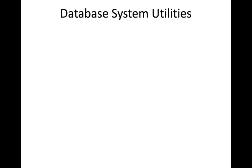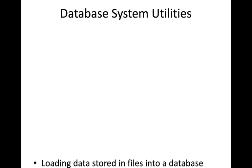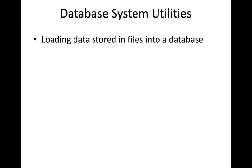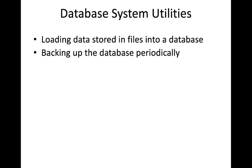Next, we will see DBMS database system utilities. In addition to the different modules already seen, there are various other system utilities provided by the database software. First is loading: there will be a loading capability to load text files or sequential files into the database. Conversion tools are also required to convert files into other formats or into internal schema. There is also a backup utility — we need to back up the software daily or when failures occur, and the DBMS package provides this utility.